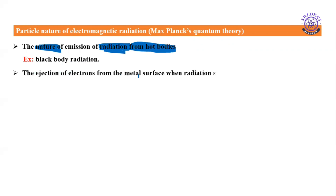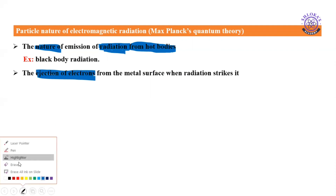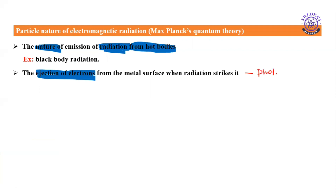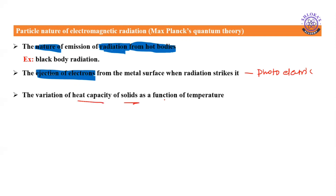The second observation is the ejection of electrons from the metal surface when radiation strikes it — the photoelectric effect. You may be aware of solar panels: when sunlight strikes the metal surface, it ejects electrons, producing photoelectric current. This photoelectric effect was also not explained by the wave nature. A third observation was the variation of heat capacity of solids as a function of temperature, which we will discuss in thermodynamics. Here, we are mainly going to discuss black body radiation and photoelectric effect.